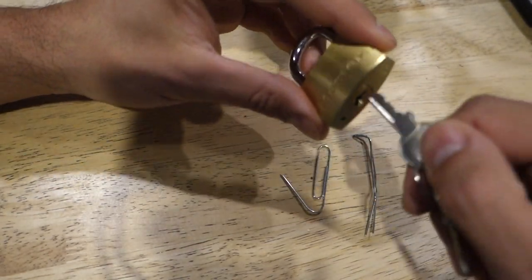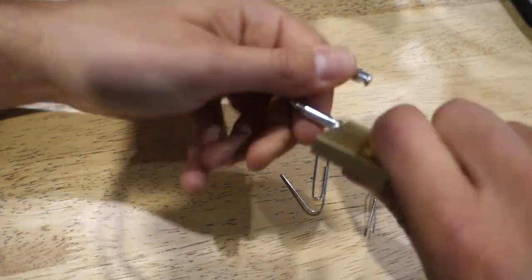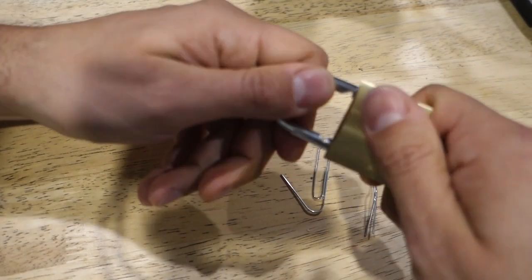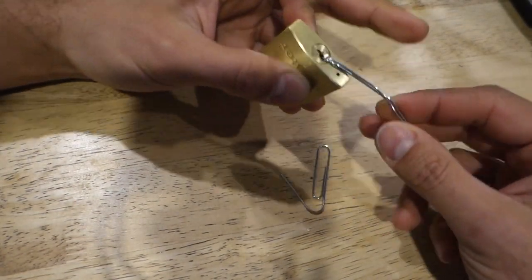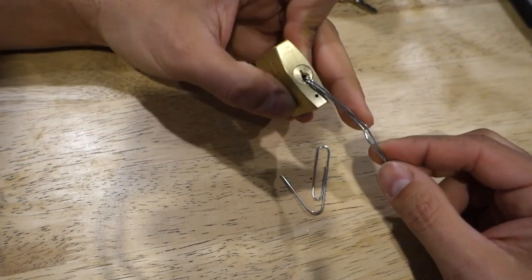What we're going to do now is test out the lock. Make sure everything's in working order. This is a brand new lock so everything should be working fine. We'll take our tensioner tool, slot that down the bottom of the keyway, apply a little bit of tension using my finger.